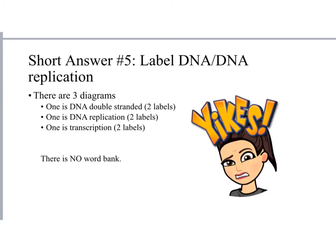For the short answer, there will be three diagrams to label. The first is a double-stranded DNA diagram — you may need to label bonds, letters, or parts such as nitrogen base, sugar, or phosphate. The second is a DNA replication diagram — you may label the leading strand, lagging strand, helicase, or Okazaki fragments. The third is a transcription diagram — you may label the promoter, 5' end, 3' end, or RNA polymerase. Review those diagrams in your notes. There is no word bank.